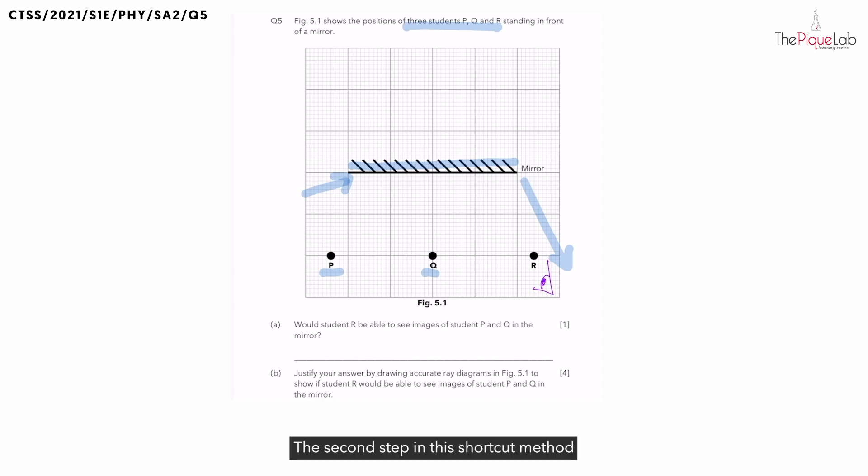The second step in this shortcut method is to draw the reflected ray from both edges of the mirror to the eye. I'm going to start from the right edge of the mirror, like this. Don't forget to add the direction of the rays. You can do the same for the other edge of the mirror.